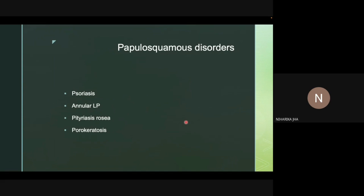Moving on to non-infectious diseases with annular appearance, starting with papulosquamous disorders: psoriasis has an annular variant with typical silvery-white scaly plaques. We can perform the Grattage test or look for other features to confirm whether a particular annular plaque is psoriasis.